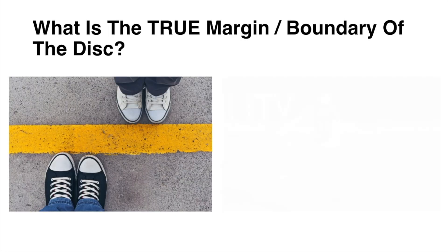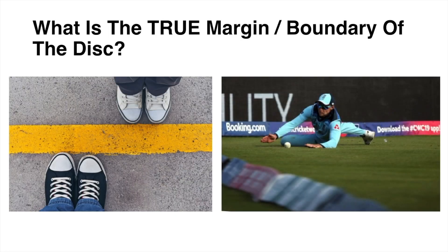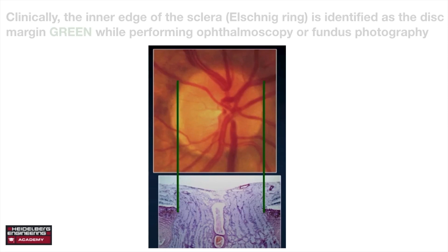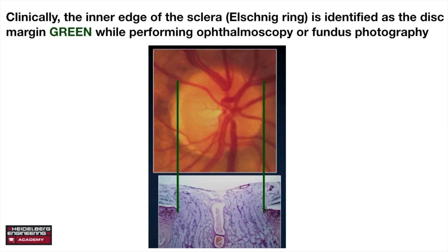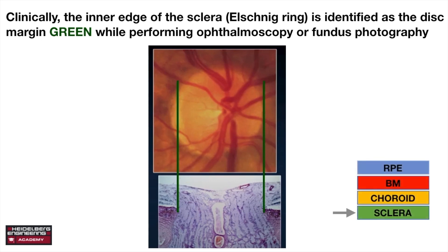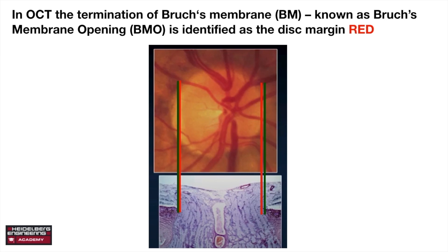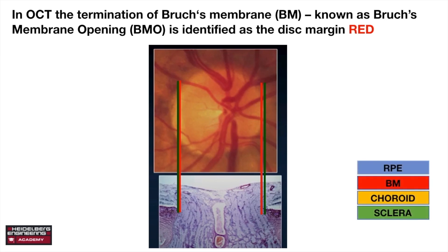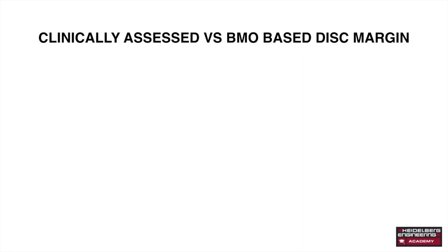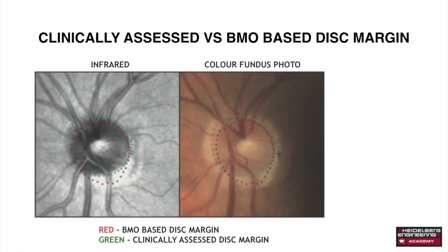What is the true margin of the optic disc? Clinically, the inner edge of the scleral Elsening ring is identified as the disc margin, depicted by the green line, while performing ophthalmoscopy or fundus photography. Whereas in OCT, the termination of Bruch's membrane — known as the Bruch's membrane opening — is identified as the disc margin, depicted by the red line. So we are left with two disc margins: the Bruch's membrane-based disc margin shown in red and the clinically assessed disc margin shown in green.